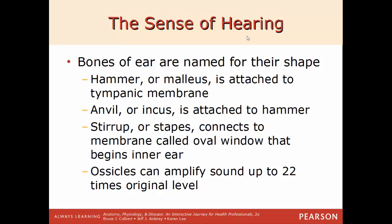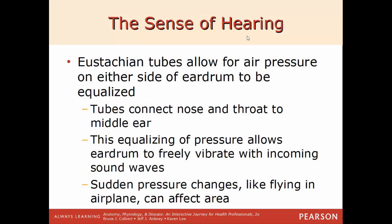The ossicles are named for their shape — their Latin name and common name. The first is the malleus or hammer, attached directly to the eardrum. Then the incus or anvil, attached directly to the hammer. Then the stapes or stirrup, which connects to a membrane called the oval window, beginning the inner ear. These ossicles help amplify the sound we hear over 20 times the original level by transmitting vibration energy to fluid within the inner ear.